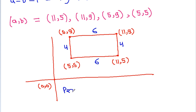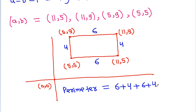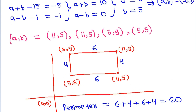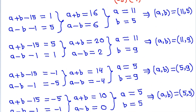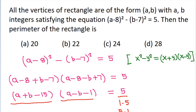So the perimeter is equal to 6 + 4 + 6 + 4 = 20. The correct option is A.